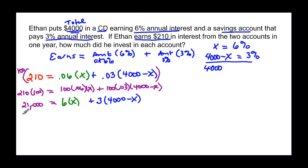21,000 equals 6x. Then 3 times 4,000 is going to be 12,000, and 3 times negative x is going to be minus 3x. On this side I'm going to have 6x minus 3x or 3x plus 12,000. And on the other side I'm going to have my 21,000.